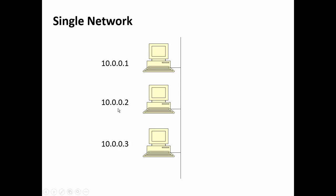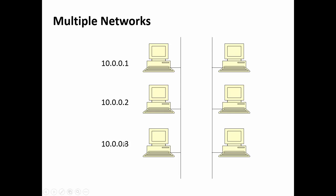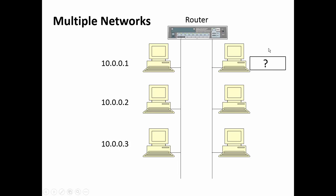If we had a single network, the first computer might have an IP address of 10.0.0.1, the next one 10.0.0.2, and the next one 10.0.0.3. If we added a second network and connected the two networks together with a router, what IP addresses would we assign to those computers? Would we assign 10.0.0.4?